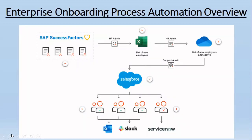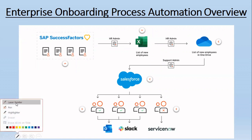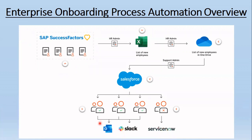This is an enterprise onboarding process automation overview, just to give you a flavor of what can be achieved once we use UiPath integration service. This particular enterprise onboarding involves SAP SuccessFactors, Salesforce, ServiceNow, Slack, and Outlook. Outlook and Excel we are pretty much used to, but there are four enterprise-level applications involved: SAP SuccessFactors, Salesforce, Slack, and ServiceNow.